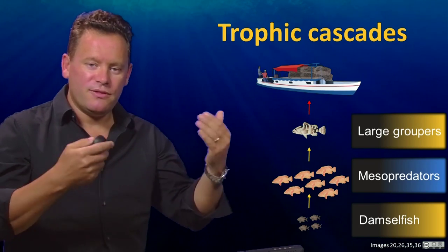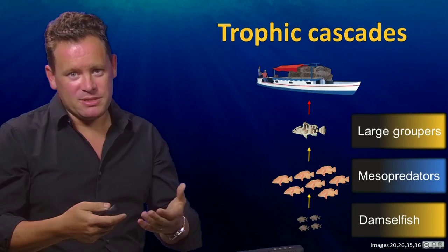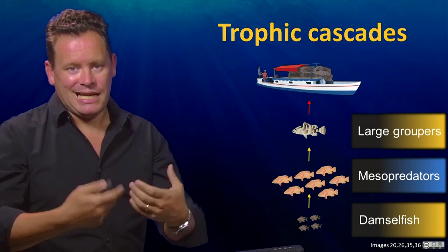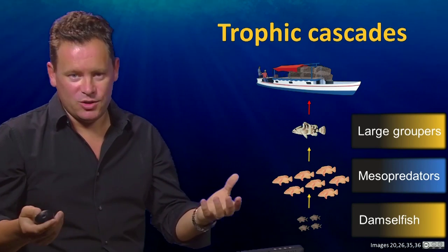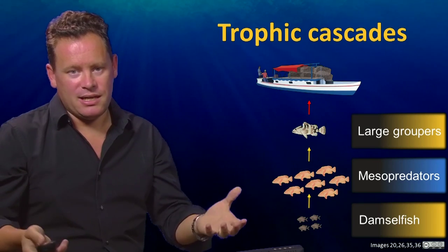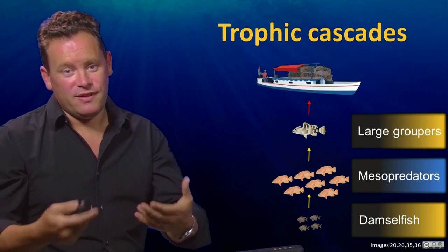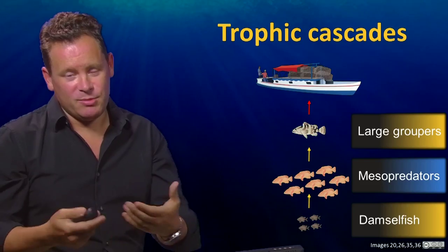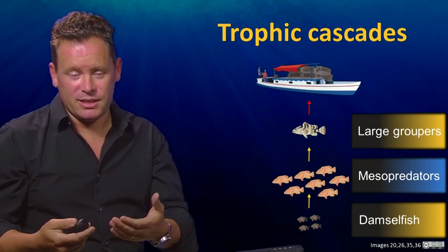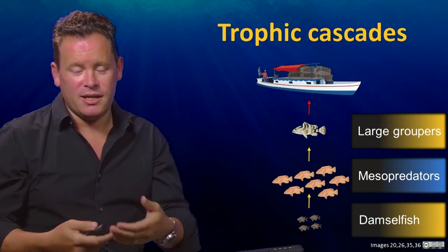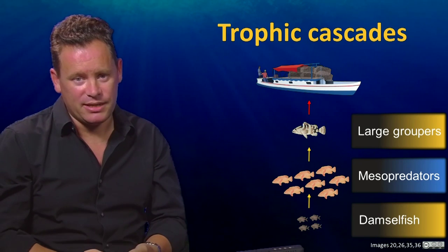So we're talking about food webs and human impacts on food webs. Fundamentally, the actions that we take can cascade through entire food webs and change what's out there on reefs and how we value what's left. Typically, we might end up with an ecosystem that looks very different from what it looked like before humans came along and had some kind of impact of their own.